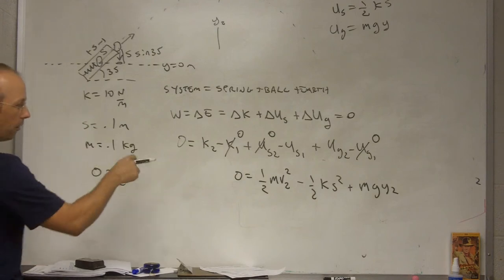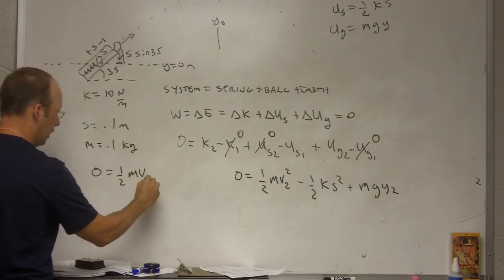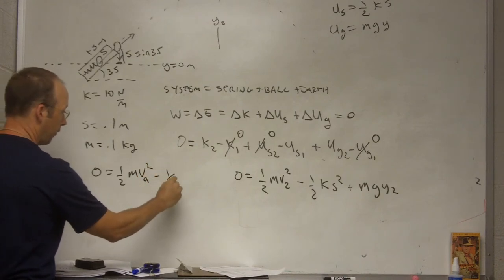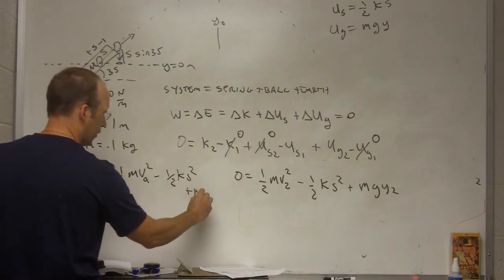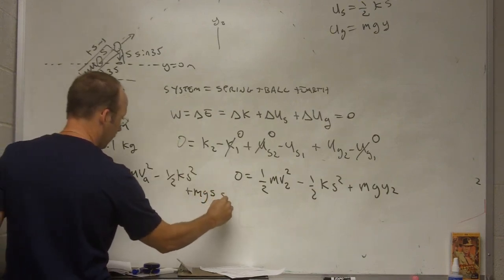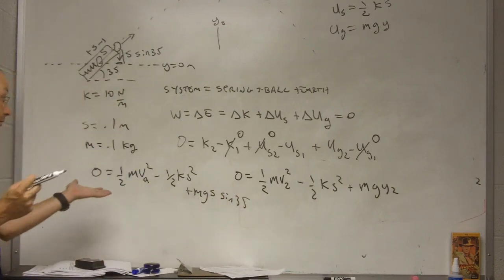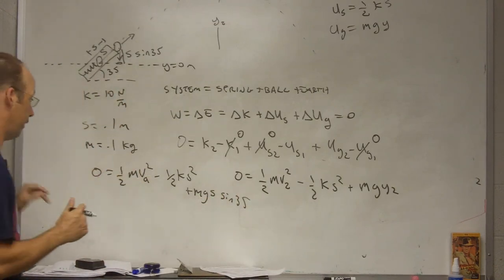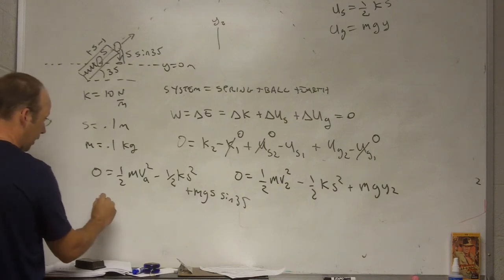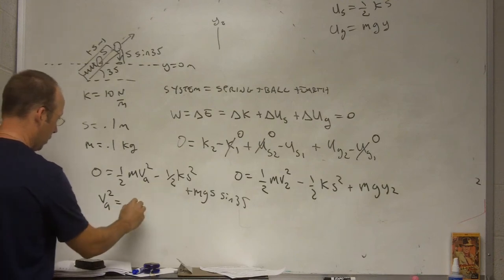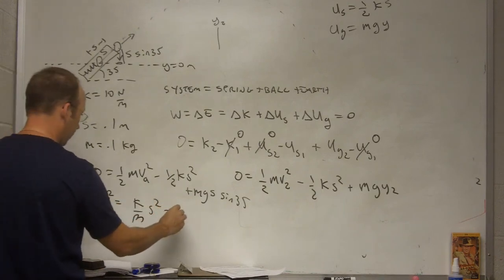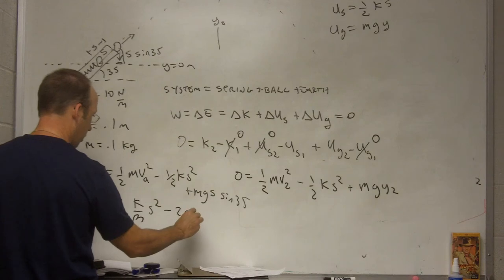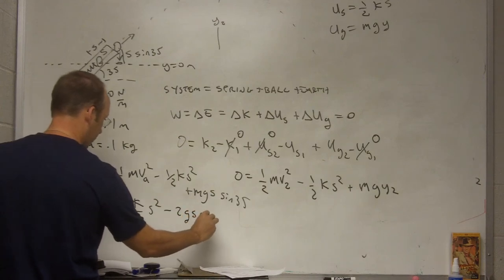So, I have zero equals one half m, I'll call this v a, because it's in the middle. And, I'll call everything a. So, one half m v a squared minus one half k s squared. Still, that's the same. And then, plus m g s sine 35. So, now this I can solve for v, right? Because I know everything. So, I get v a squared equals k over m. I'm skipping some steps, because I'm going fast. S squared minus 2 g s sine 35.